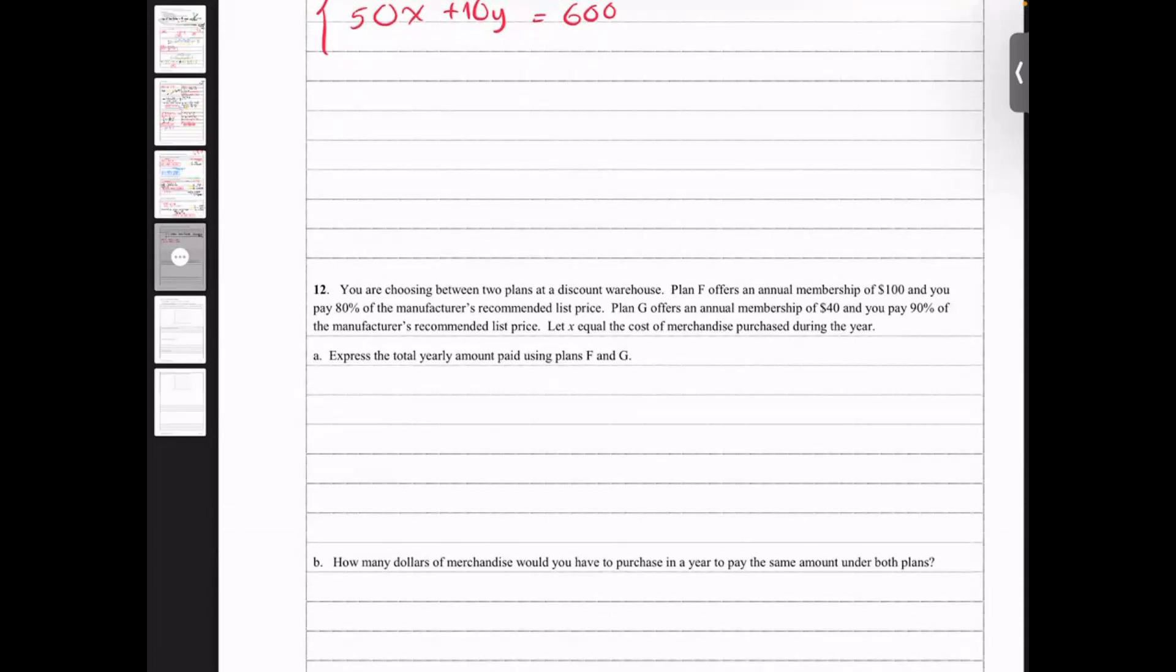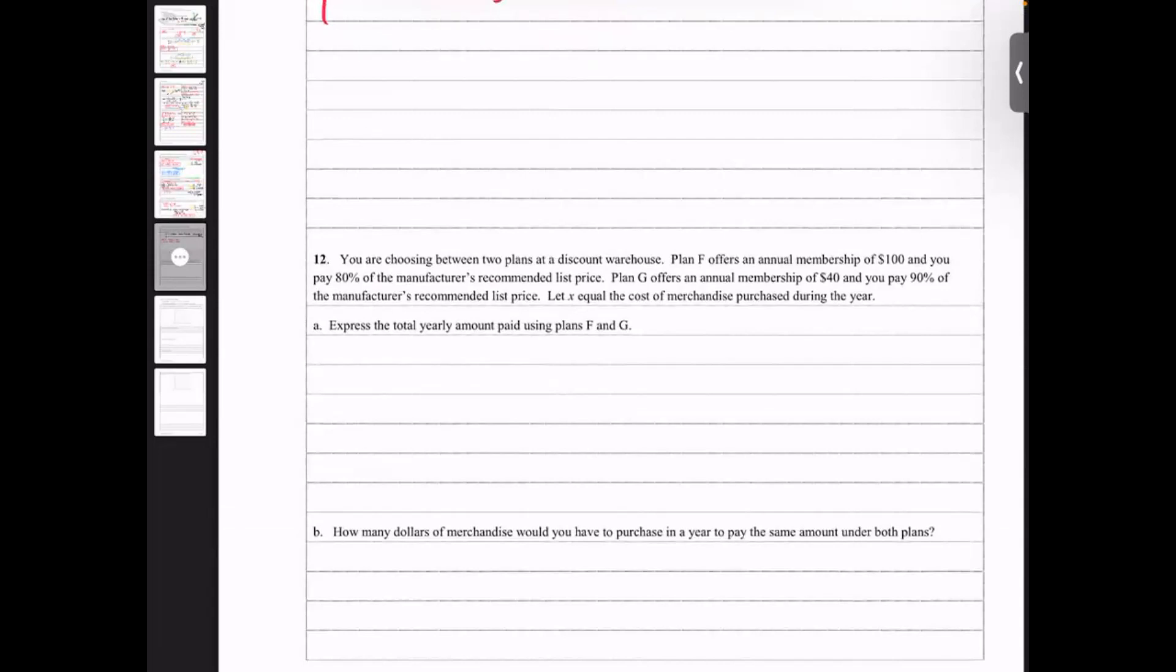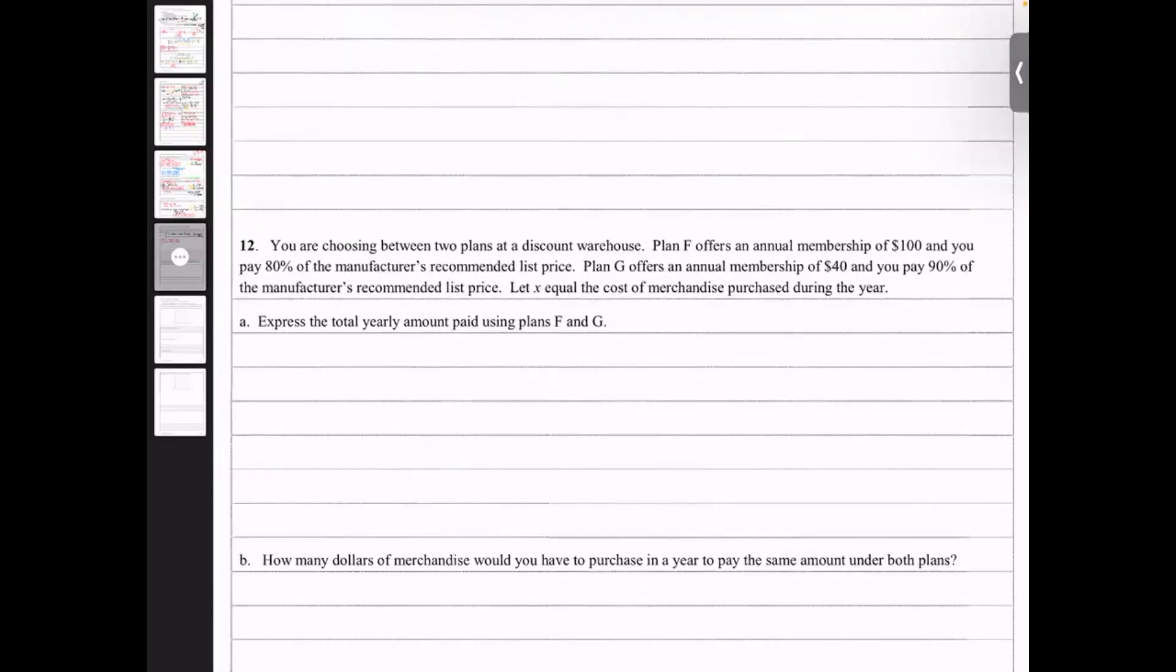If you're choosing two plans at a discount warehouse, plan F offers an annual membership of $100, so that's a fixed amount of dollars that you gotta pay, right, membership. And you pay 80% of the manufacturer recommended list price.